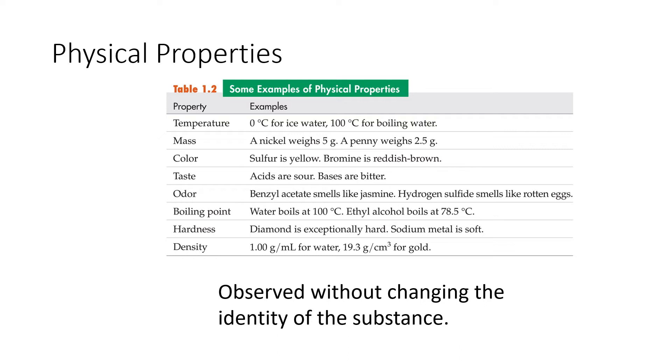Physical properties are properties of matter that can be observed without changing the identity of the substance. I really want to focus for physical and chemical on the concept of identity. If we're not changing the identity, it's either a physical property that we're observing or a physical change. But if the process we're looking at is changing the identity of the substance, then we're going to call that a chemical property or a chemical change. So this chart lists some of these examples of physical properties, things like boiling point, color, things of that nature.